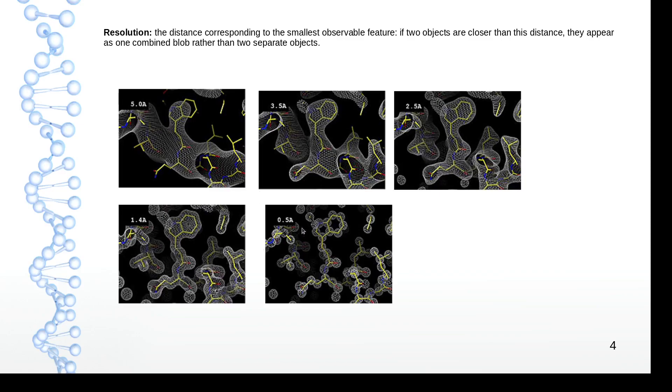But in a 0.5 angstrom structure, you can go into details. You can zoom in till the distance as low as 0.5 angstrom. So it is the distance corresponding to the smallest observable feature.